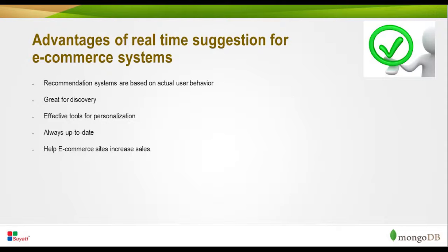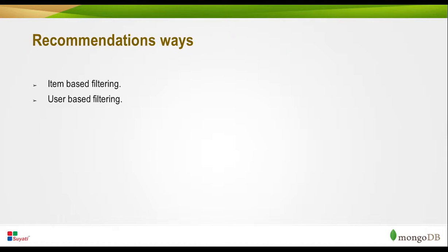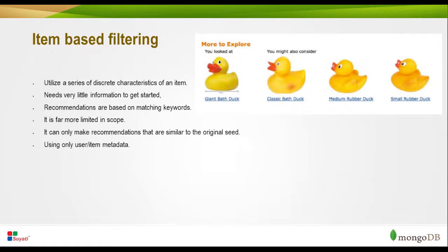Let's move on to recommendation approaches. There are mainly two ways: item-based filtering and user-based filtering. Item-based filtering is a simple method to recommend an item. It uses a series of discrete characteristics of an item to find similar items, such as same brand, same category, price range, etc. The system needs only very little information to get started, and recommendations are based on matching keywords.